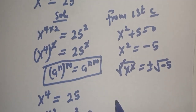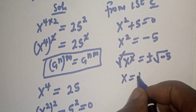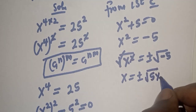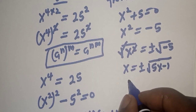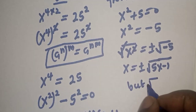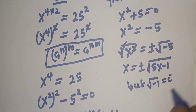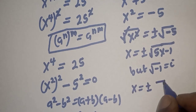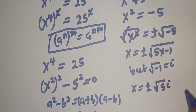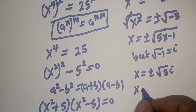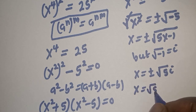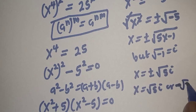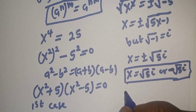The square root of S squared is equal to plus or minus the square root of minus 5. This cancels, giving S is equal to plus or minus the square root of 5 multiplied by minus 1. But the square root of minus 1 is equal to i. Therefore, S is equal to plus or minus square root of 5 times i.